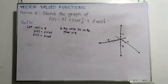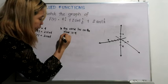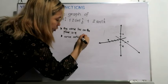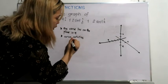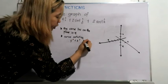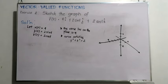Moreover, from our previous lessons, we should be familiar with the components y and z consisting of the parametric equations of the circle of radius 2. Thus, the curve satisfies the equation y squared plus z squared equals 4. From these two inferences, we may expect that the graph could be a circle of radius 2 lying on the plane x equals 4.